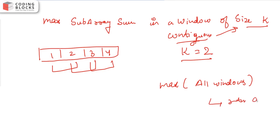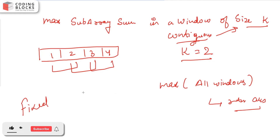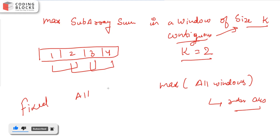Whenever you encounter a fixed window problem — meaning it's specified that you need to find all possible windows of size k — you can use this pattern. Let's try to code this problem; I'll also share the problem link with you.